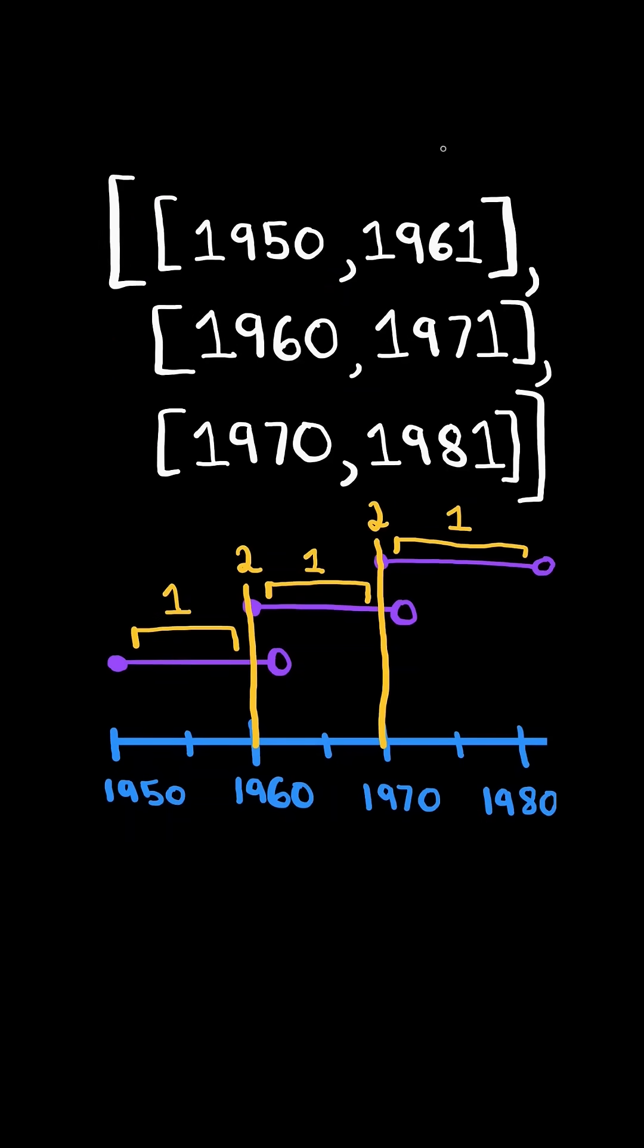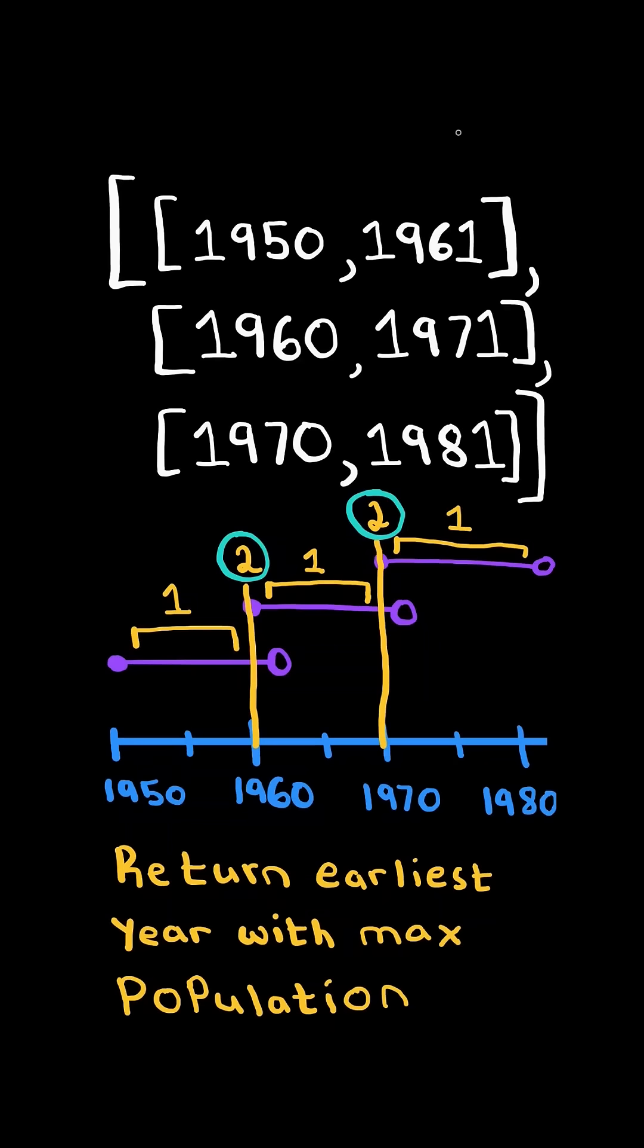Consider the total population during each of the years. 2 is the maximum population, and we return the earliest year with the highest population. We will solve this in O(n log n) time.